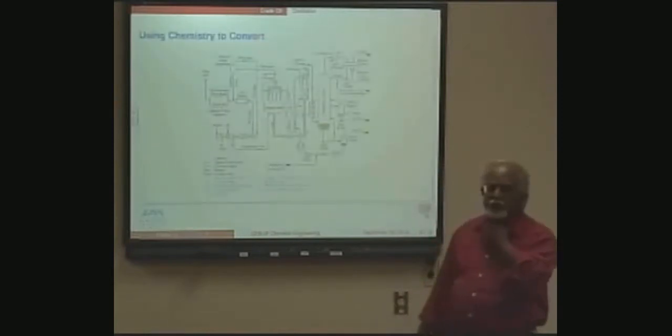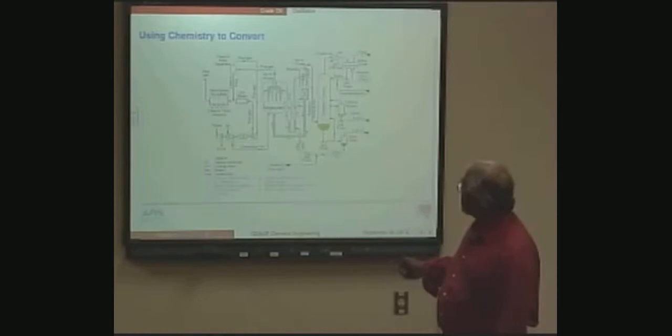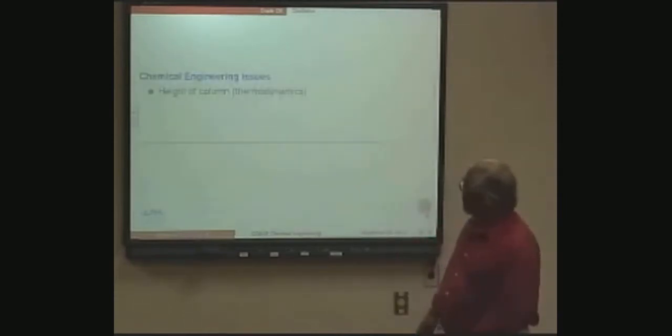This is just another more detailed process diagram of some of the chemistries used to convert crude oil into different fractions and materials. Here you see some of the chemistries used - there's a catalyst reactor, this is a fluid catalytic cracking unit, a catalyst reactor used to convert larger molecules into smaller molecules which are more valuable.